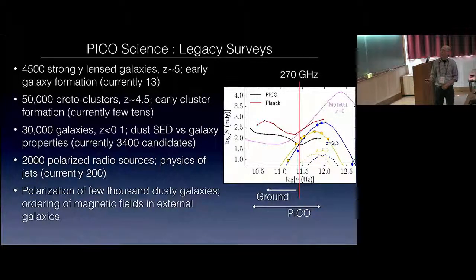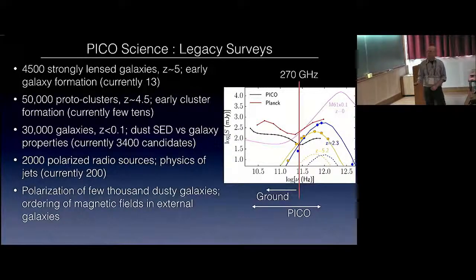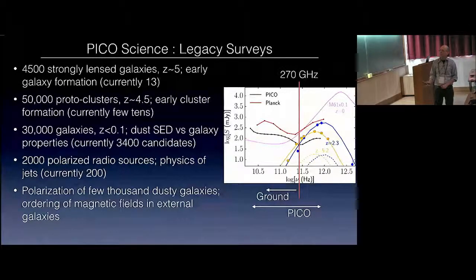Fifty thousand proto-clusters up to z equal 4.5. Currently only few tens are known. Thirty thousand galaxies at low redshift to give the dust SED as a function of galaxy property. Two thousand polarized radio sources. And polarization of few thousand dusty galaxies to get the ordering of magnetic fields in those galaxies.